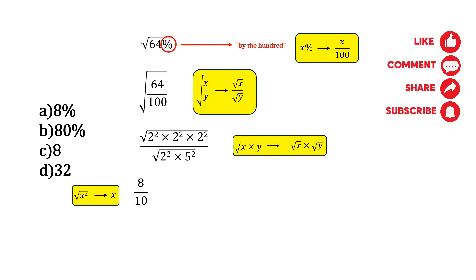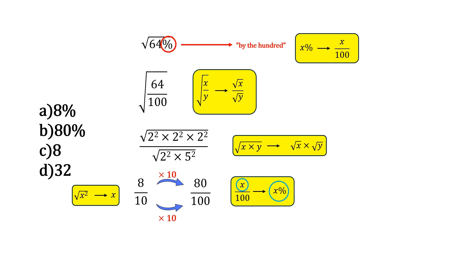Okay, so obviously 8 over 10 isn't an answer to this question, or at least not an option. So let's see how else we can express this number. So we can actually express this as a percentage again. So if you recall, a percentage is any number over 100, and that number is the percentage. So if we can convert 8 over 10 to something over 100, which we can by multiplying by 10, we get 80 over 100, and 80 over 100 is the same as saying 80%.